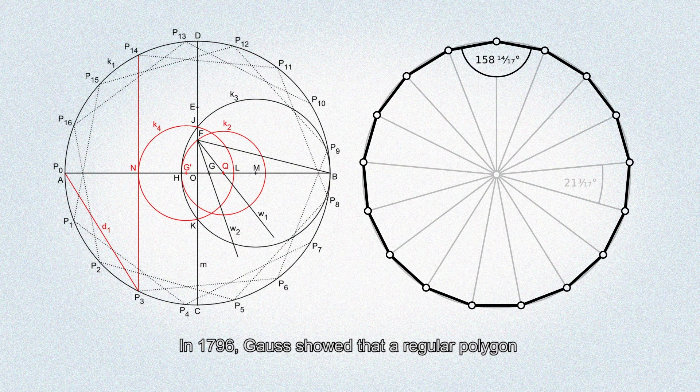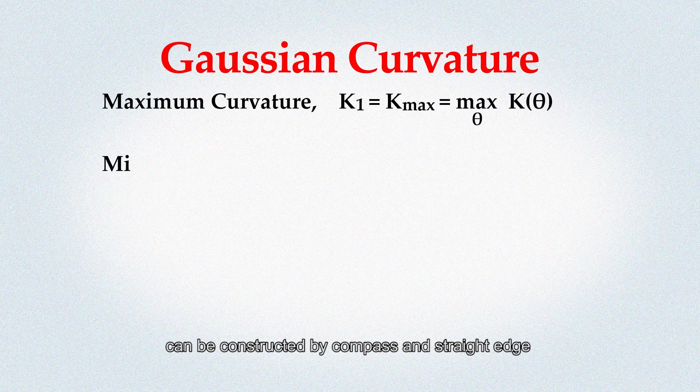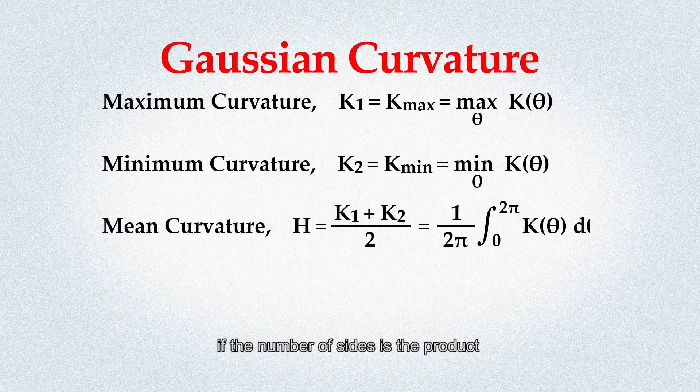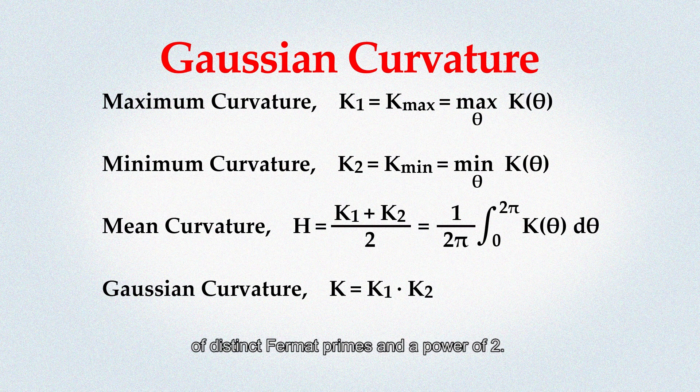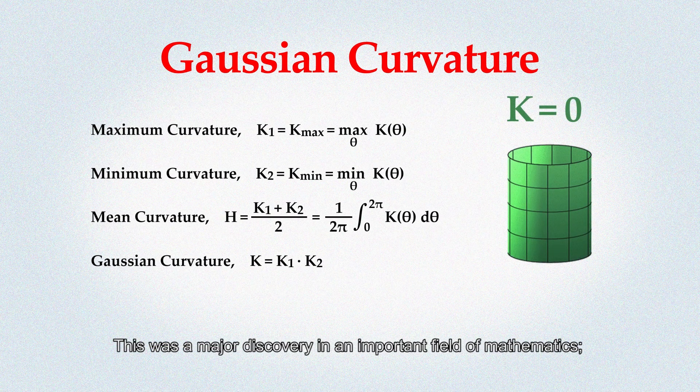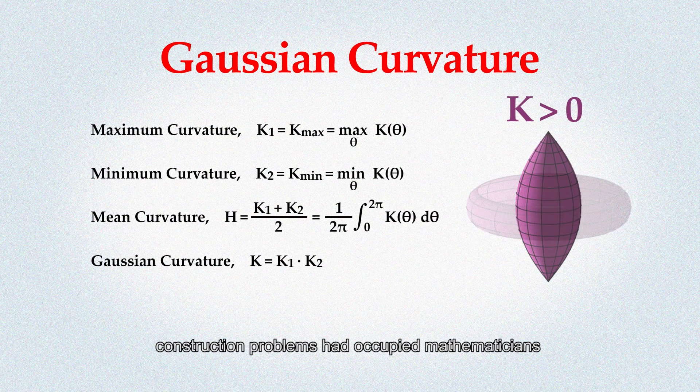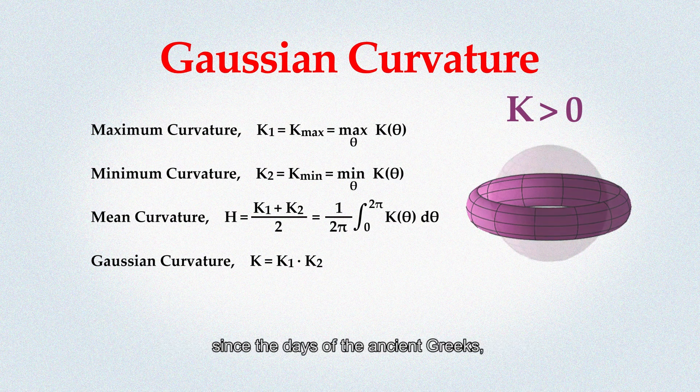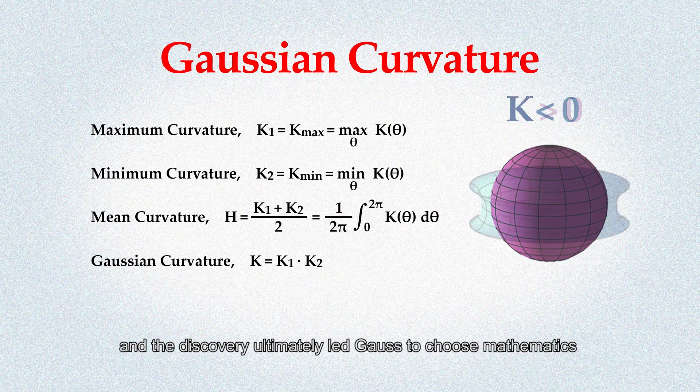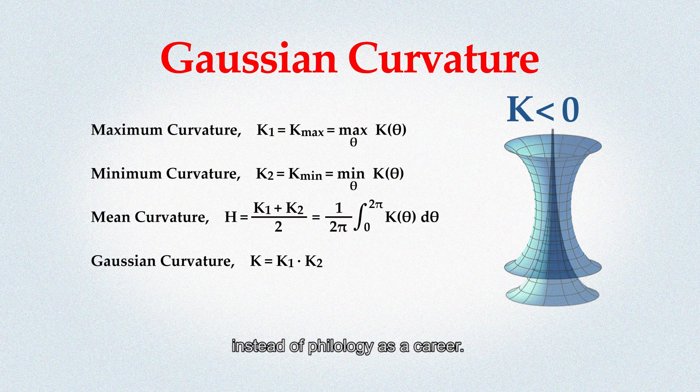In 1796, Gauss showed that a regular polygon can be constructed by compass and straight edge if the number of sides is the product of distinct Fermat primes and a power of 2. This was a major discovery in an important field of mathematics. Construction problems had occupied mathematicians since the days of the ancient Greeks, and the discovery ultimately led Gauss to choose mathematics instead of philology as a career.